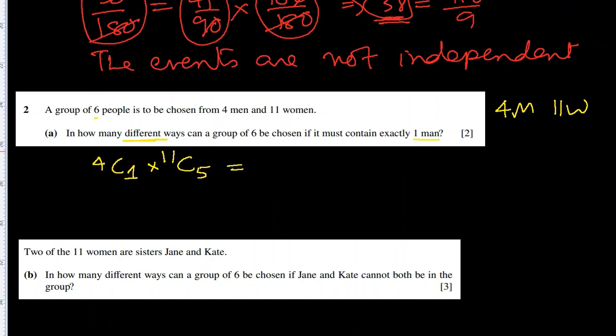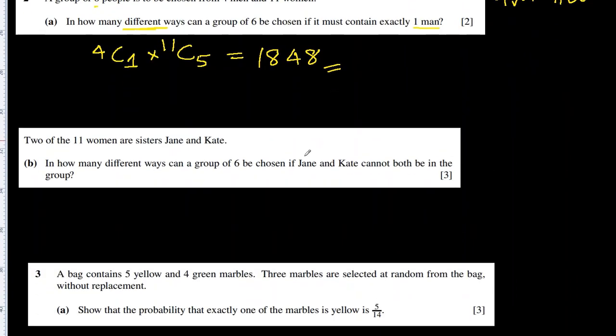We can put this in a calculator: 4C1 times 11C5. The answer is 1848 different ways.